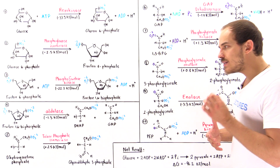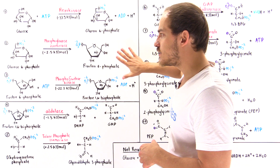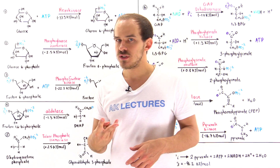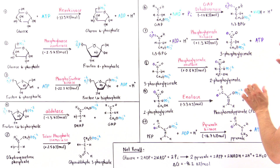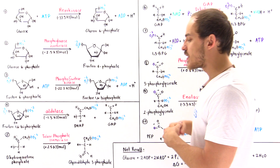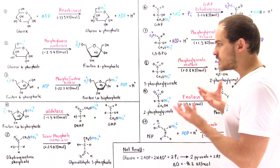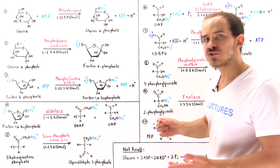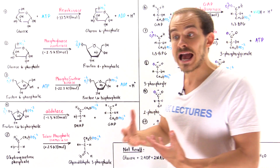We typically break down glycolysis into three stages. Stage one consists of three steps, stage two consists of two steps, and stage three—the most complex—consists of five steps. The reason we break glycolysis into these three stages is that each stage carries out its own specific purpose and function.